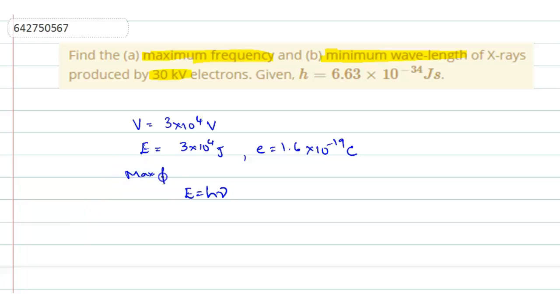Let me write that statement here. So maximum frequency is equal to the energy of electrons and that is why E is equal to H nu. And when you substitute in it, you have to write it for nu. So nu is equal to E by H. So E will be equal to 3 into 10 power 4 into 1.6 into 10 power minus 19 divided by H. H is they have given 6.63 into 10 power minus 34. So that the frequency nu comes out to be 7.24 into 10 power 18 hertz.